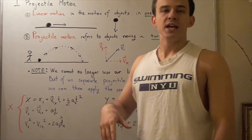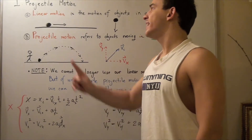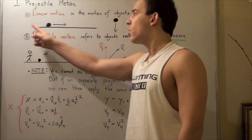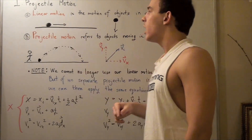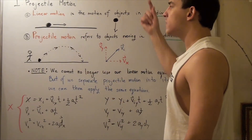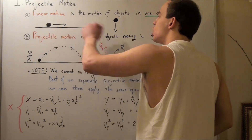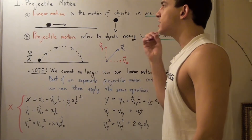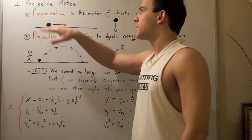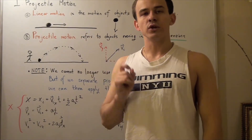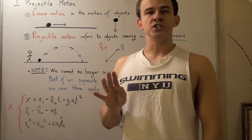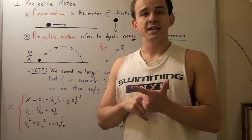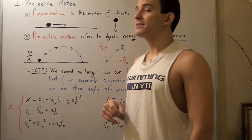Let's say our object is a ball. If our ball is moving in linear motion, that means it's moving either along our x-axis in one direction, or along our y-axis. Our ball is allowed to move either sideways or up and down. And if our object is moving in linear motion under constant acceleration, we have four equations to find either velocity, time, displacement, or acceleration.